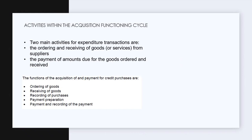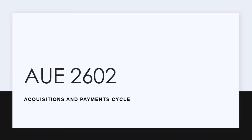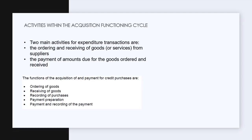There are two main activities within the cycle. The acquisition cycle relates to the expenses side of your income statement. When you make an expenditure for your business it will involve ordering and receiving goods from suppliers. The other activity is that after ordering and receiving those goods, you have to make a payment. That's why it's called the acquisition and payment cycle.